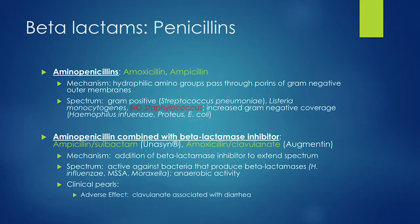You can combine aminopenicillins with beta-lactamase inhibitors — ampicillin-sulbactam or amoxicillin-clavulanate. These beta-lactamase inhibitors further broaden the spectrum of the antibiotic, and they also give you anaerobe coverage as well as gram positive and gram negative coverage.